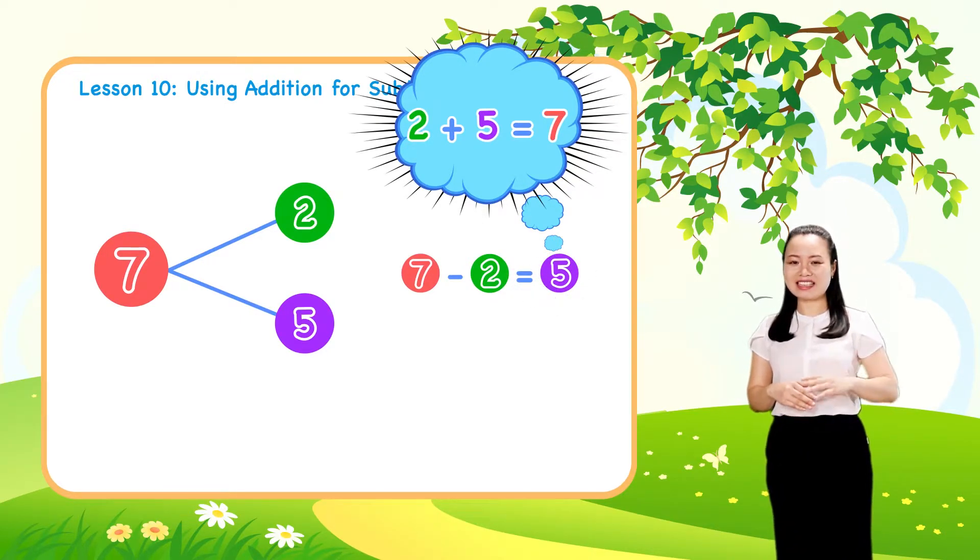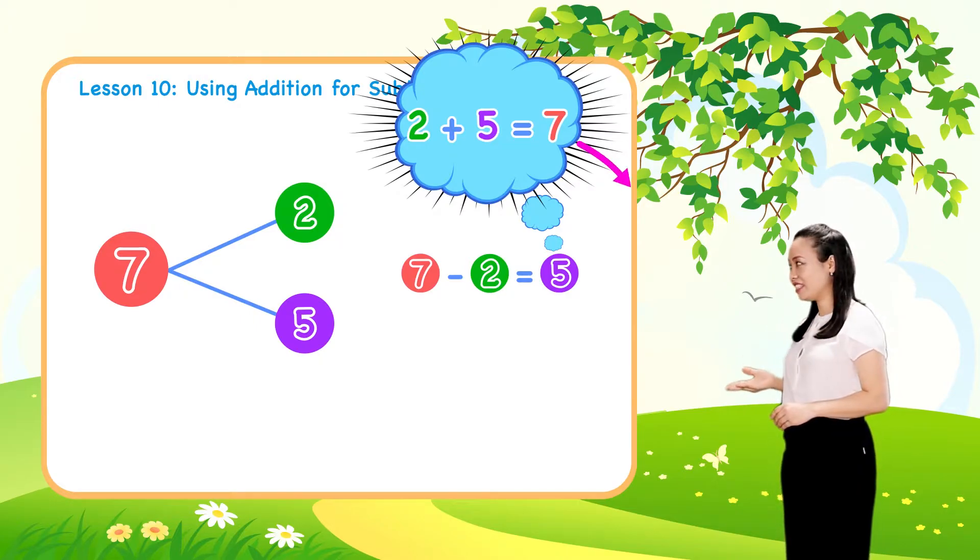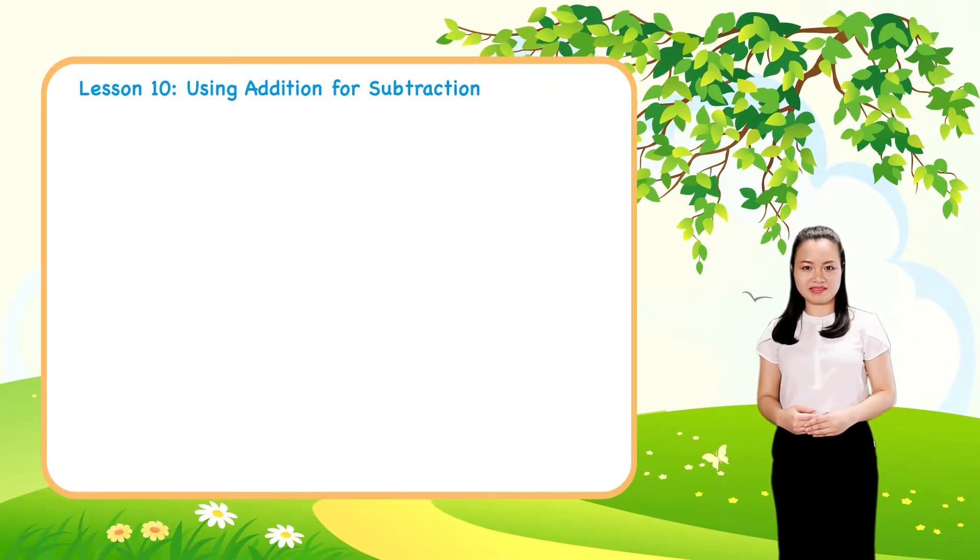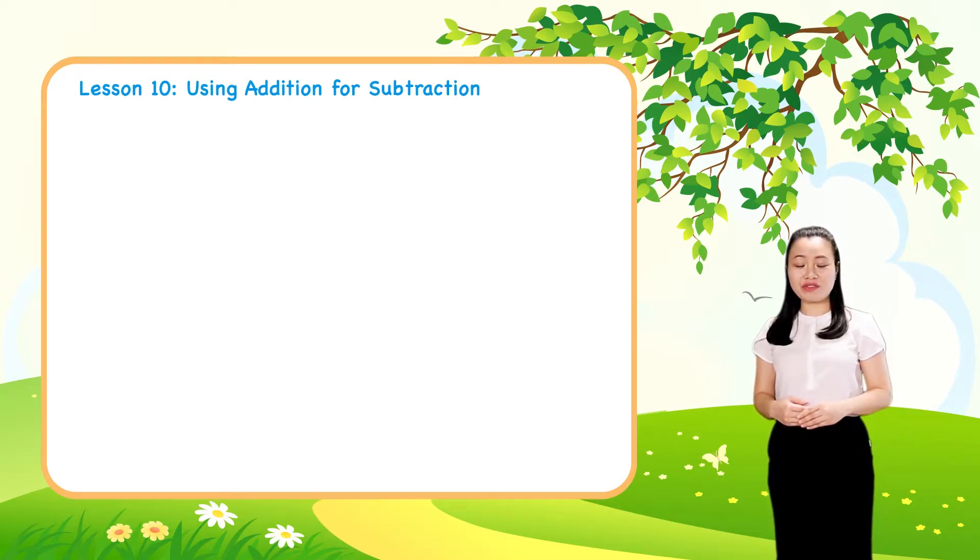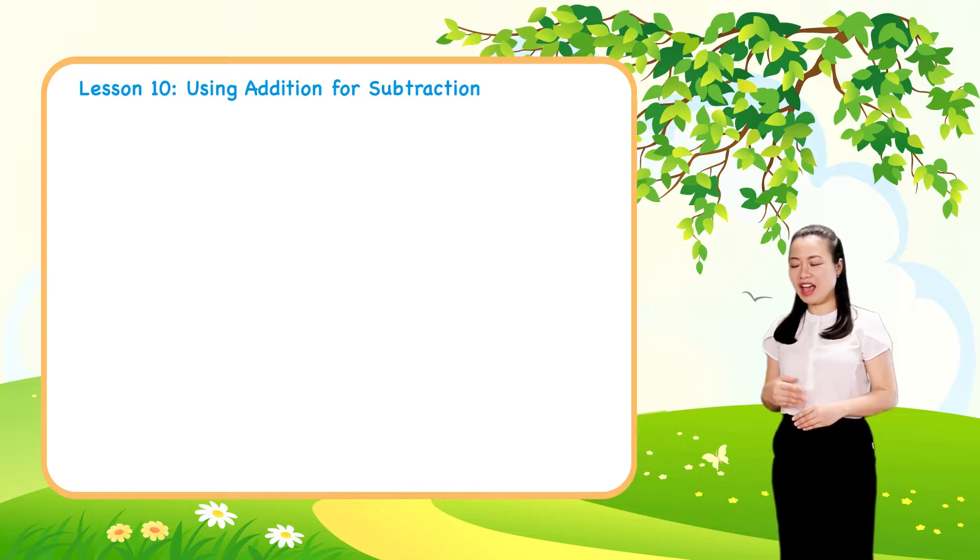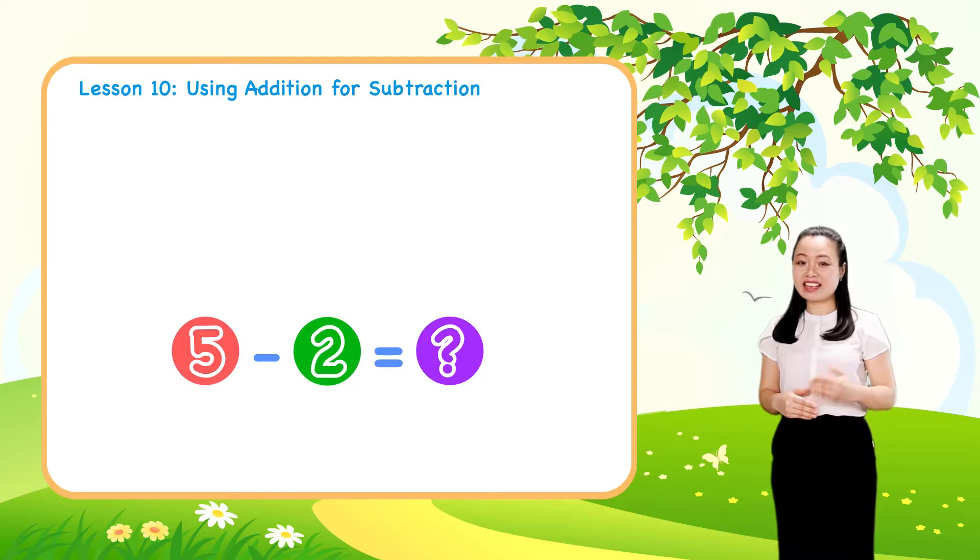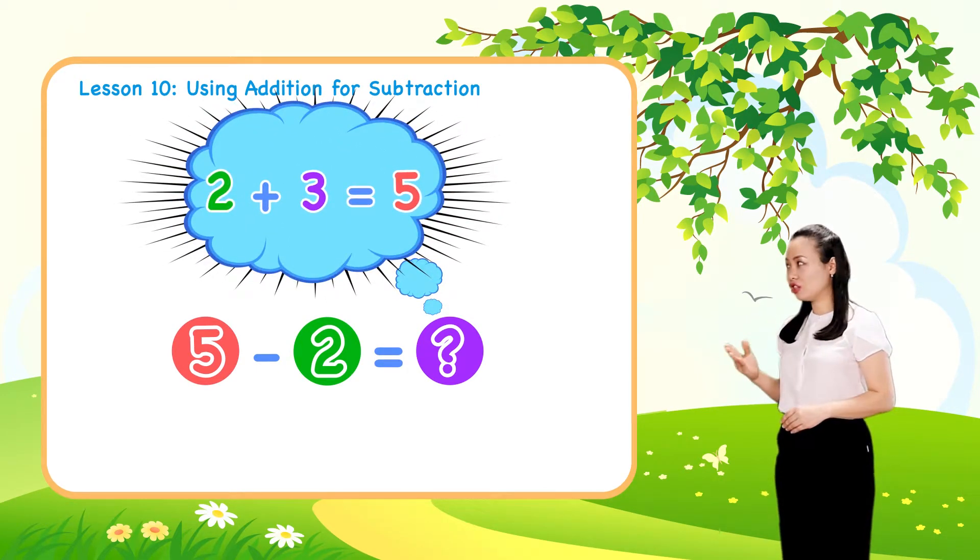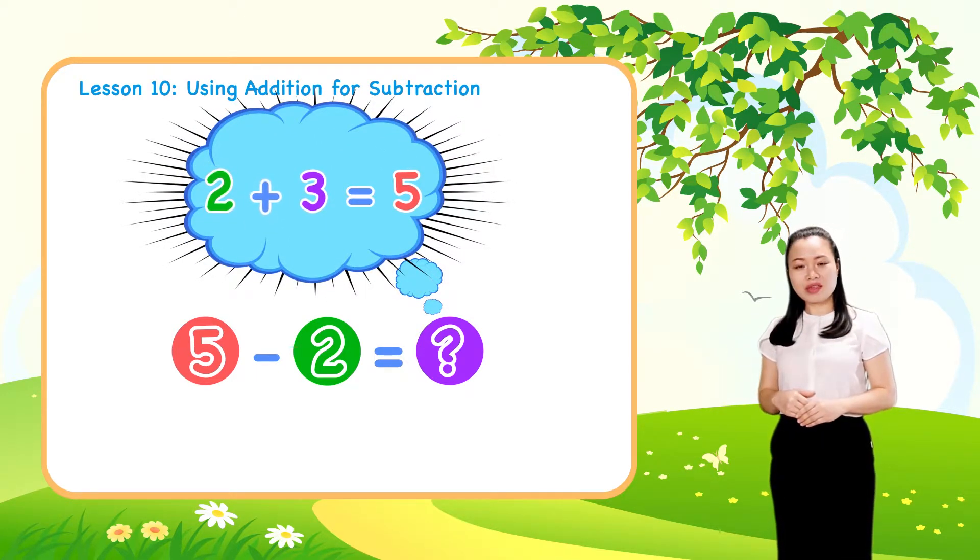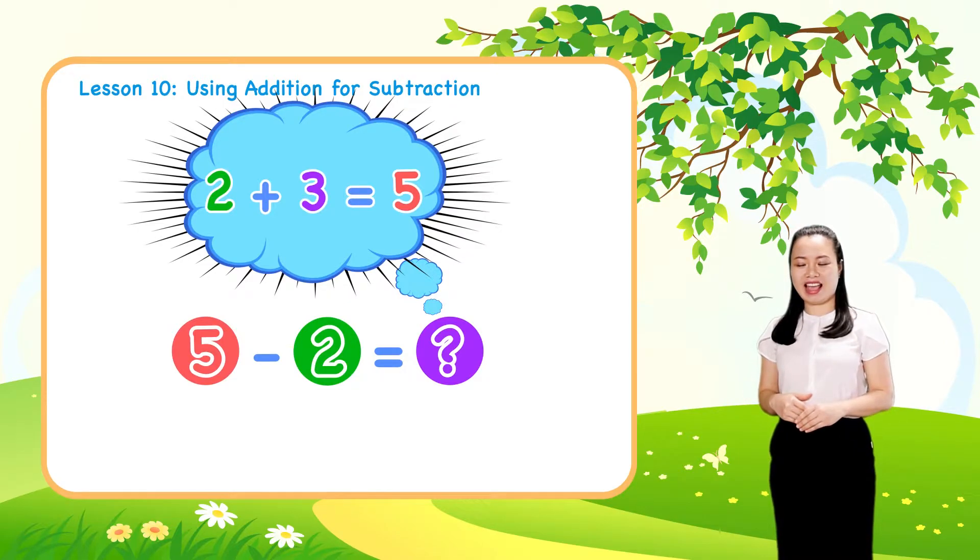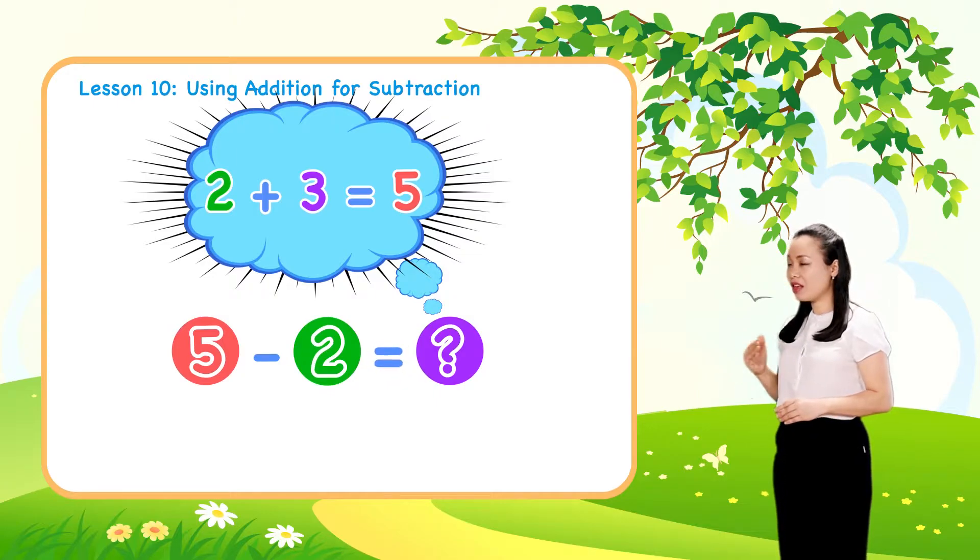As you can see, we can think addition and subtraction. Let's take another example. If you are asked to find 5 minus 2, then you can think because 2 plus 3 equals 5, therefore 5 minus 2 equals 3.